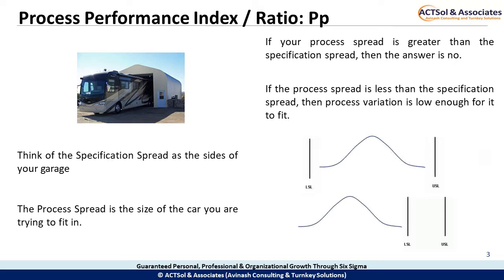Now, look at the two graphs on the screen. The first one shows that the process meets the specification and thus has a potential of good performance. The second one shows that the process does not meet the specifications and thus has a bad potential performance.